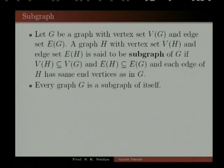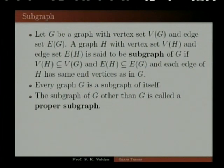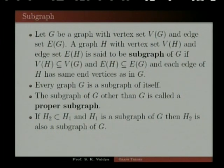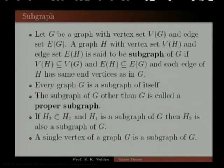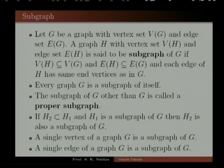We note down certain remarks: every graph G is a sub-graph of itself. A sub-graph of G other than G itself is called a proper sub-graph. If H2 is a subset of H1 and H1 is a sub-graph of any graph G, then H2 is also a sub-graph of G. A single vertex of a graph G is a sub-graph of G, and a single edge of a graph G is also a sub-graph of G.